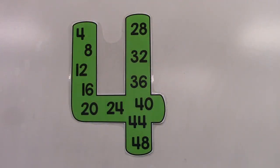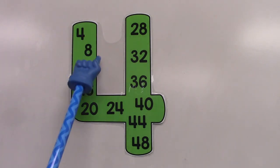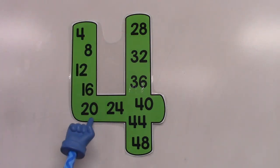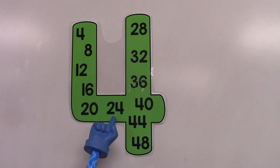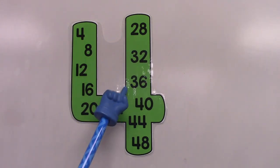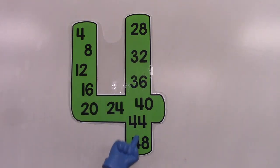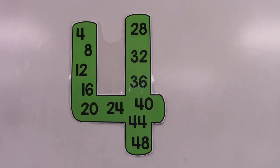Let's skip count by the number 4: 4, 8, 12, 16, 20, 24, 28, 32, 36, 40, 44, and 48. Counting by 4s is really great.